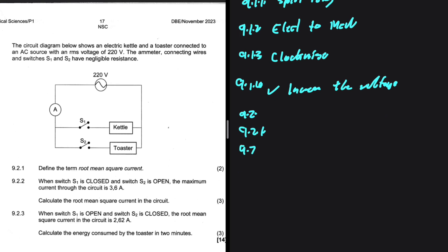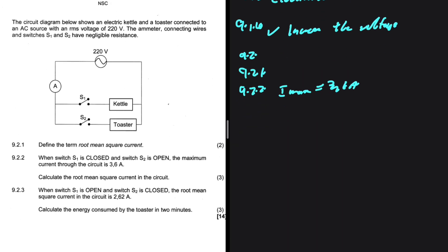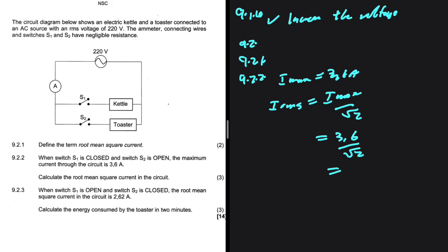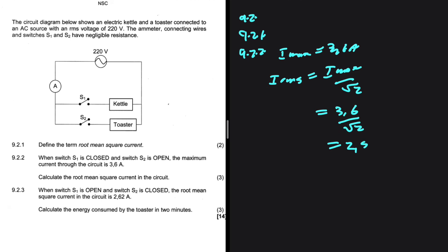9.2.1 is supposed to define the term root mean square current. I'm going to leave that one for you. Let's do 9.2.2. When switch S1 is closed and switch S2 is open, the maximum current IMAX equals 3.6 Ampere. Calculate the root mean square current in the circuit. So, we're going to have IRMS equals IMAX divided by square root of 2. IMAX 3.6 divided by square root of 2. I'm getting 2.55 Ampere as my answer to 9.2.2.